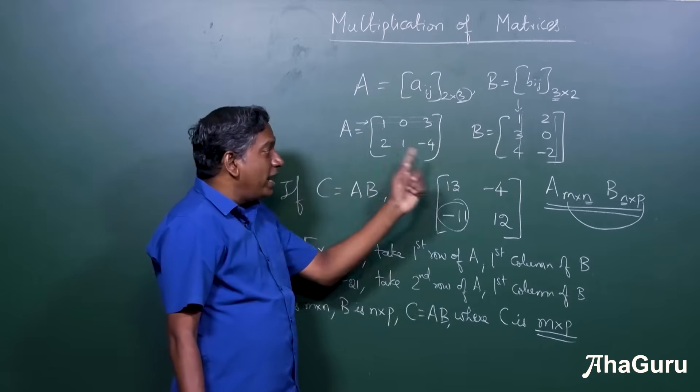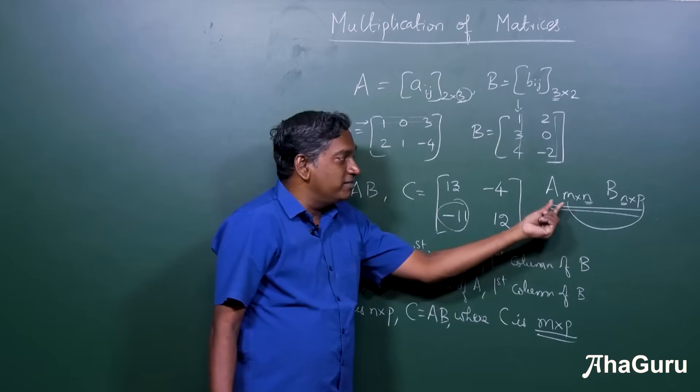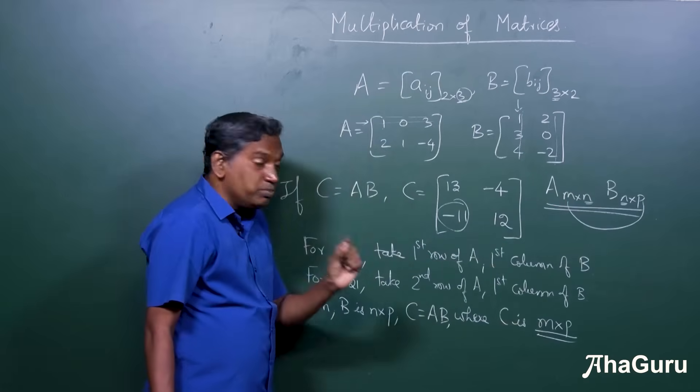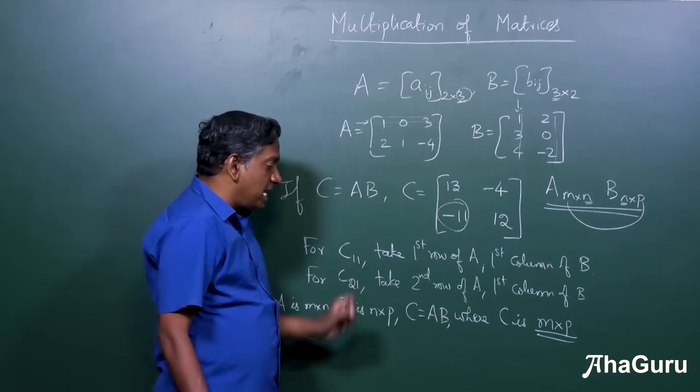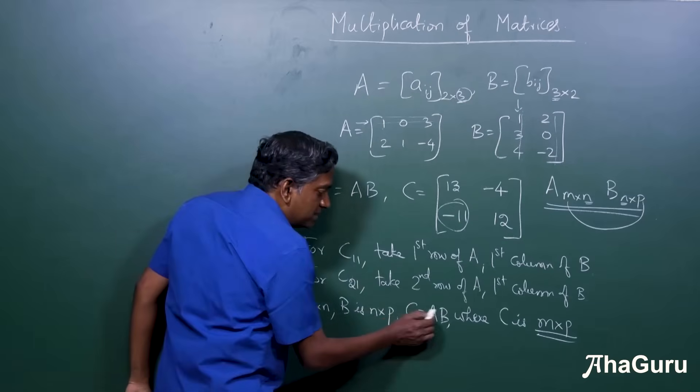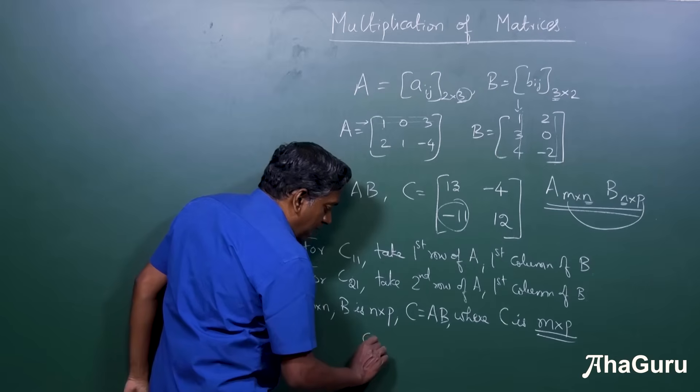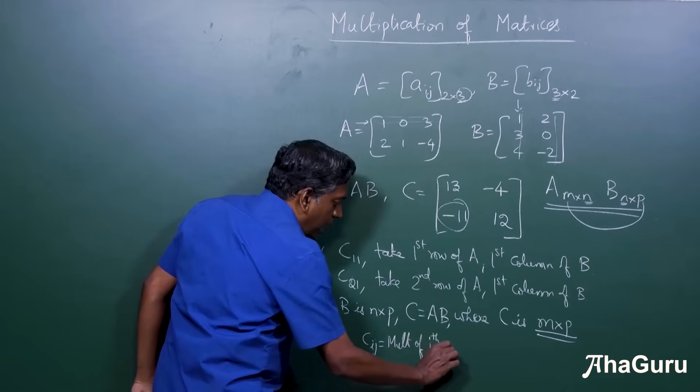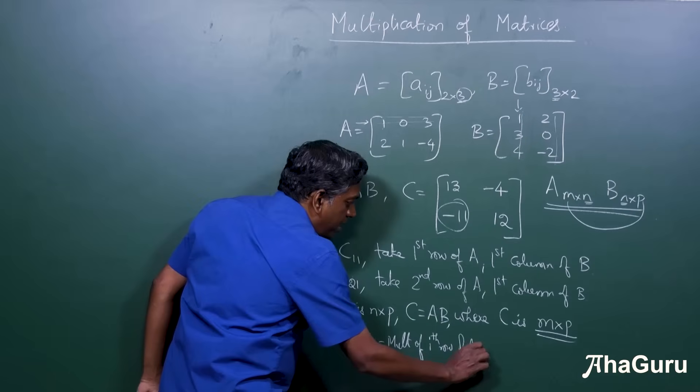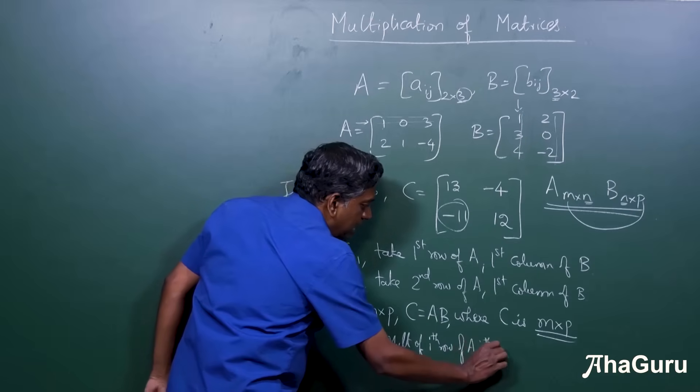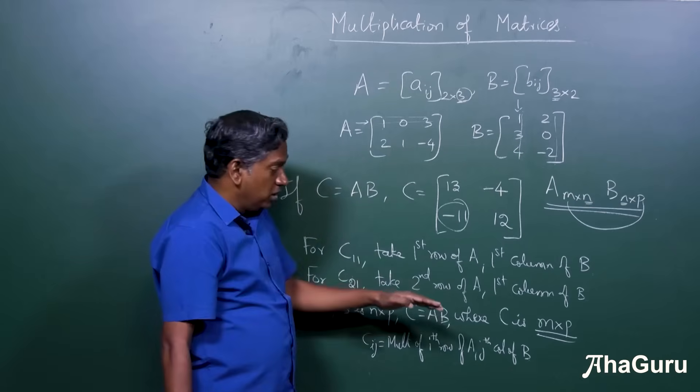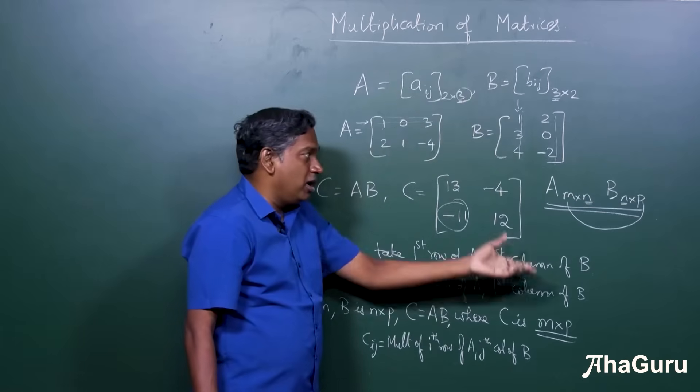But the reason why it is 2 by 2, not just because we can easily write an M and a P. The reason it is that is because, look at what is Cij. In the general case, where C is AB, Cij is multiplication of i-th row of A and j-th column of B.